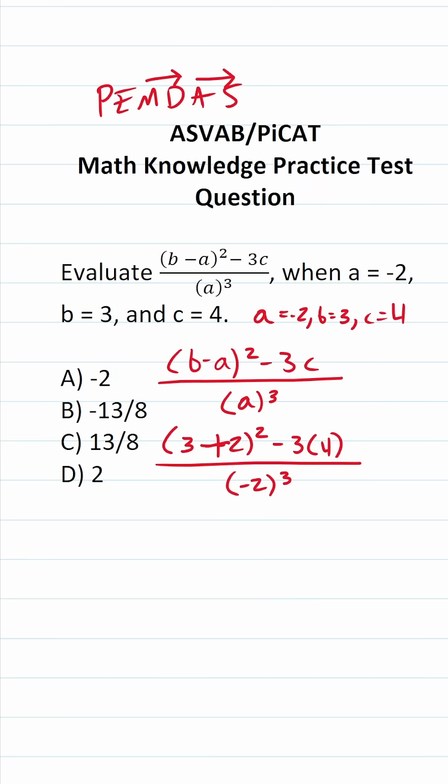In this case, we do have something in parentheses: 3 plus 2. So this becomes 5² - 3 × 4 all over (-2)³. We've taken care of everything in parentheses.